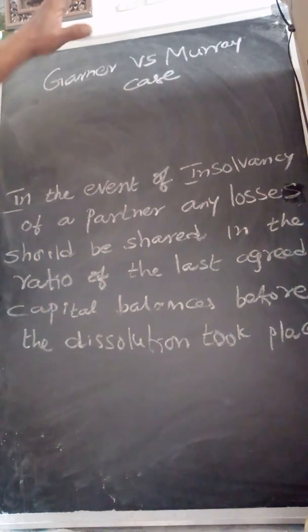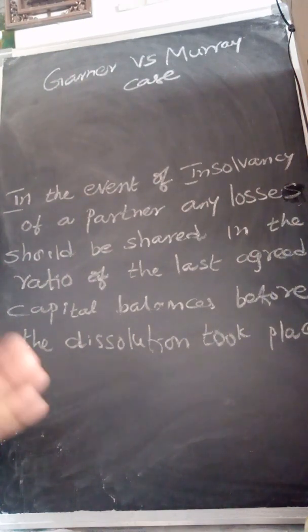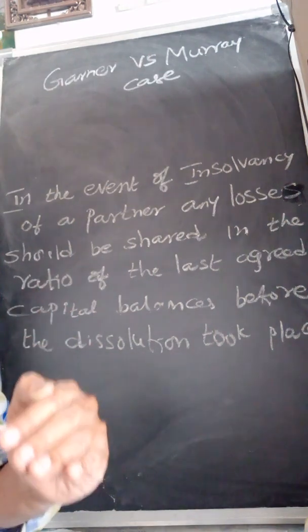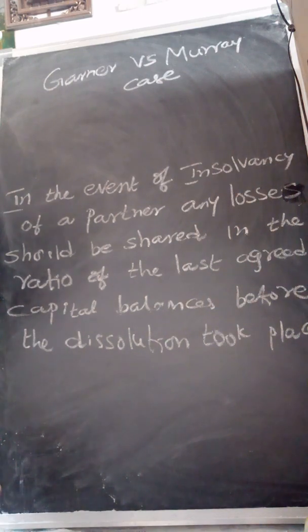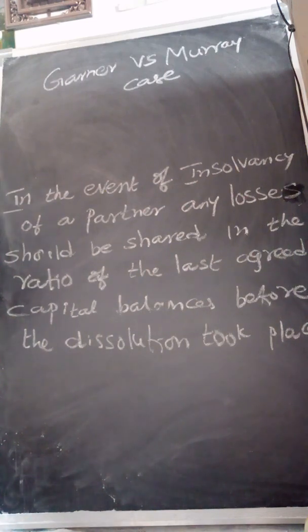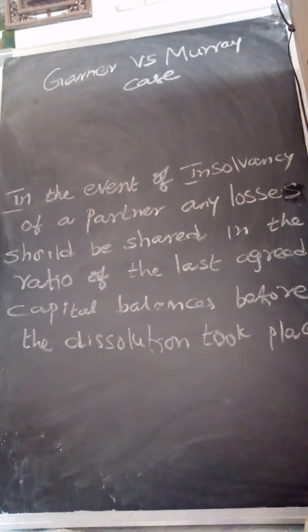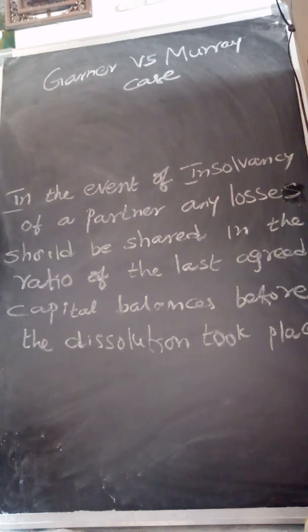This is the Garner vs. Murray case. In the exam, you should write it like this: This case refers to the insolvency of a partner when a partnership firm is dissolved. We prepare a realization account; the realization loss is distributed to all partners. The solvent partners introduce their share of loss in cash. The debit balance of the insolvent partner's capital account is then borne by the solvent partners in their capital ratio — using fixed capital as-is, or recalculating the ratio after adjustments in case of fluctuating capitals.